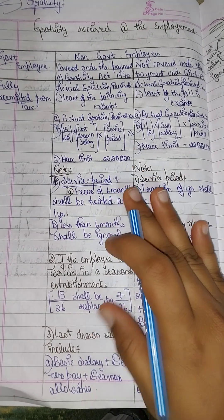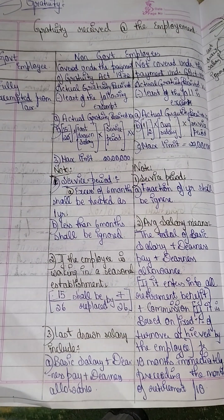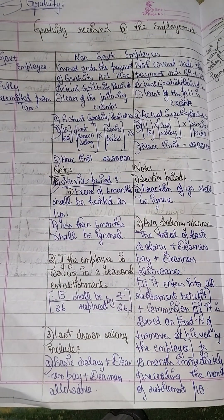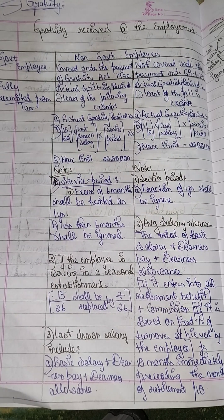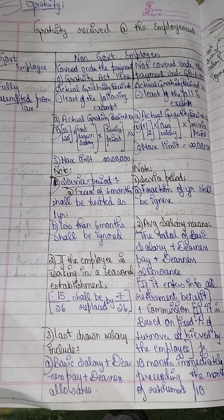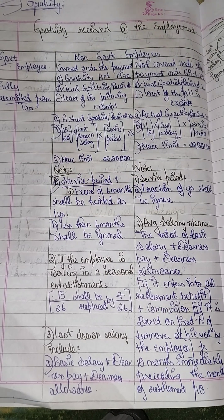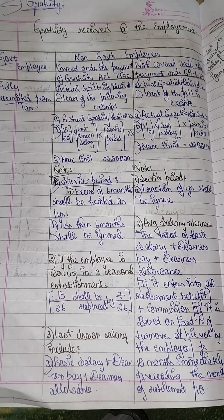The second topic is Gratuity. So what is Gratuity? The next topic is RFA and then Gratuity. At the time of retirement, that is the benefit from the employer — that is Gratuity.